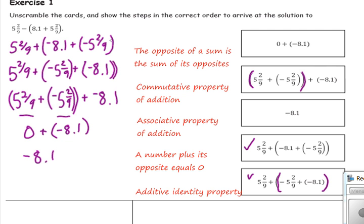To summarize Exercise 1: the first step used the rule that the opposite of a sum is the sum of its opposites. The second step applied the commutative property to change the order of the addends. The third step used the associative property to regroup the parentheses from the second two terms to the first two terms. Then we combined opposites to get 0, and added 0 to get negative 8.1.